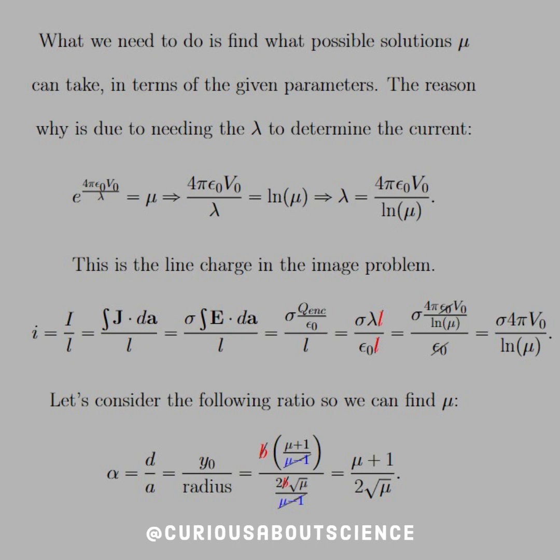So then let's consider the following ratio so we can find mu explicitly that isn't determined in terms of the exponential or V not. So if we let alpha be the ratio of the separation distance from the origin to the radius of the pipe, then we see that we have Y not over radius, and we solve for what those were earlier. Y not was equal to the center point in the line problem, which was B beta, and then radius we also solved, which was 2B mu over mu minus 1, so once we've plugged those in, we see the terms cancel, that's mu minus 1, and we see the B's cancel, so we're left with mu plus 1 over 2 square root mu. So we have something for mu here, in terms of the given parameters, D and A, that are substituted as alpha, and so now we just solve this for mu.